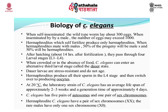At 20 degrees Celsius, the average lifespan is approximately 2 to 3 weeks with a generation time of approximately 4 days. After hatching, which is almost 14 hours after fertilization, they pass through 4 larval stages labeled as L1 to L4. Hermaphrodites produce all their sperm in the L4 stage and then switch over to producing oocytes. During unfavorable situations like overcrowding or absence of food, C. elegans can enter an alternative third larval stage called the dauer stage or the arrest stage.